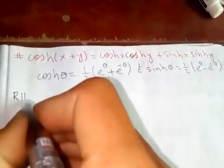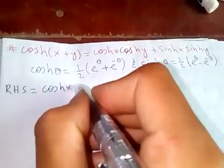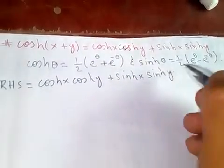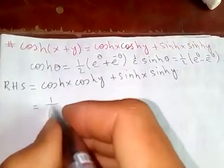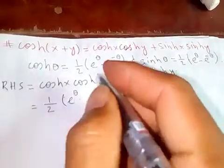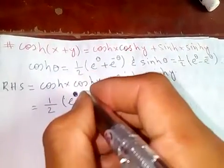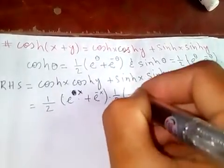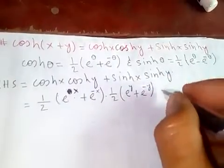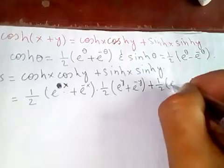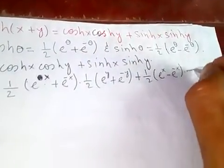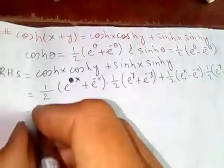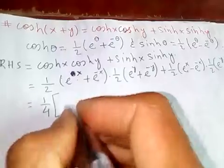Let's start from the right-hand side, which is cosh(x)cosh(y) + sinh(x)sinh(y). Applying the definitions: we get (1/2)(e^x + e^{-x}) times (1/2)(e^y + e^{-y}), plus (1/2)(e^x - e^{-x}) times (1/2)(e^y - e^{-y}). Now 1/4 will be common from both terms.